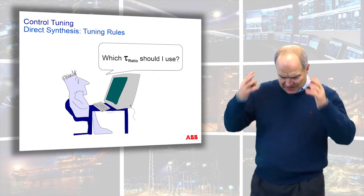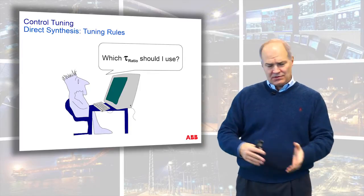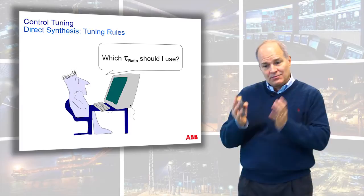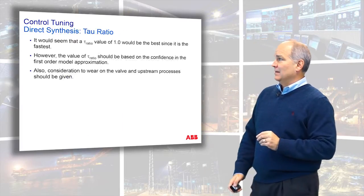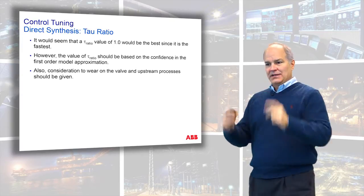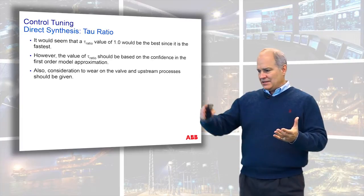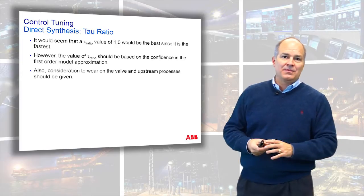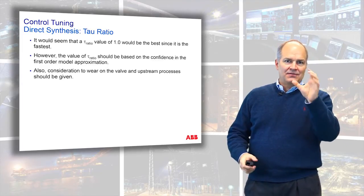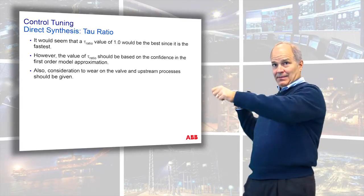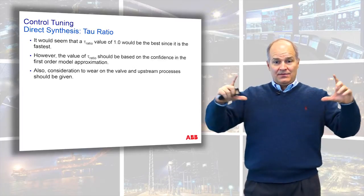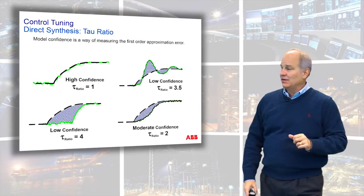What tau ratio should you use? This goes back to model mismatch. Think of tau ratio like sizing a target for an archer. If the archer hits the bullseye every time, you don't need a big target. But if he's inconsistent, you need a big one. The more uncertainty you have in your process model, the bigger your tau ratio needs to be. If your first-order model matches the process well, you can use tau ratio 1. If there's delay or other dynamics not captured by the model, go with a larger tau ratio to avoid hunting — an oscillating controller.